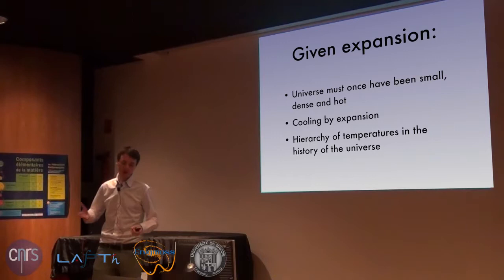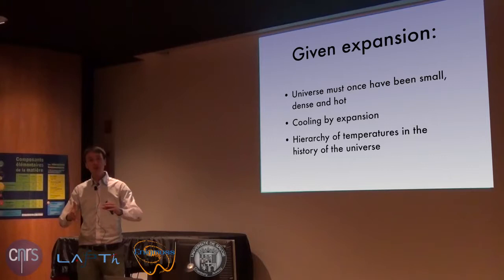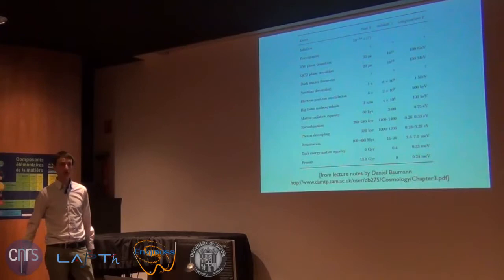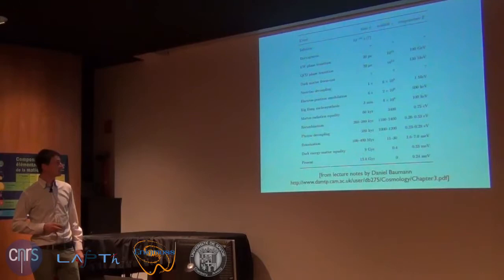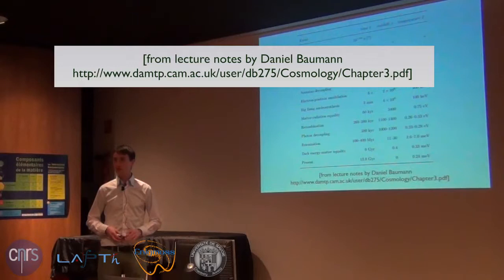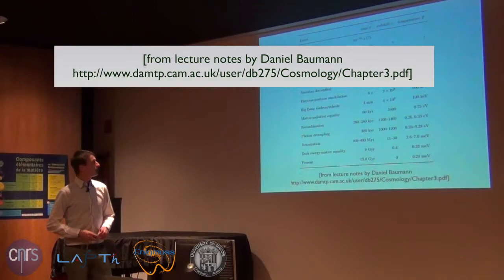There must have been a hierarchy of temperatures in the history of the universe — the universe was very hot and is at any time cooling down. So there must be a relation between the temperature of the universe and the age of the universe. If you just write down that model and look at its implications, you get a hierarchy that looks like a table of certain events in the history of the universe. I took this table from lecture notes by Daniel Bauman, which I think are good notes — you can find them by Googling.